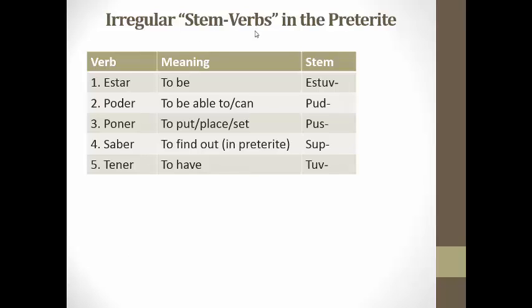The reason they're called irregular stem verbs is because their stems are irregular. A stem of the verb is what's left when you drop the AR, ER, or IR. So let's first take a look at estar. We would guess its stem is EST, but that is incorrect in the preterite tense — its stem is ESTUV. With poder, its stem is PUD. Poner's stem is PUS. Saber's stem is SUP. And tener's stem is TUV.